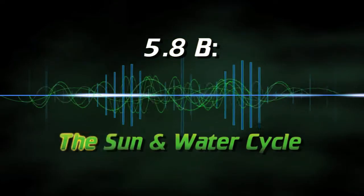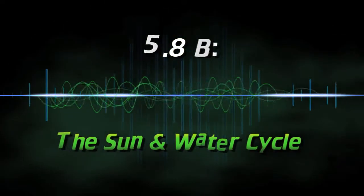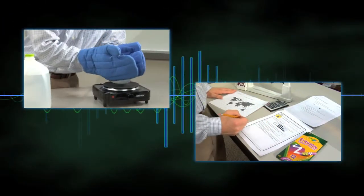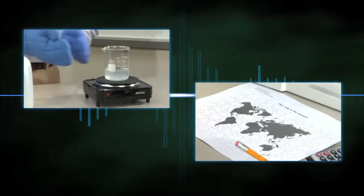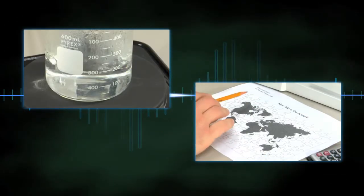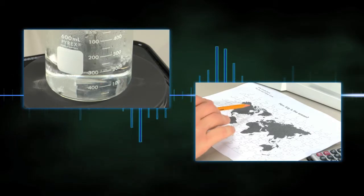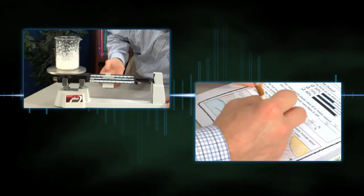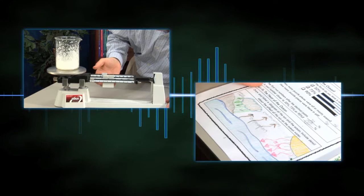5.8b The Sun and Water Cycle. In this activity, students learn how the sun and the ocean interact during the water cycle by simulating the heat of the sun to evaporate water, calculating the size of the ocean, and drawing a water cycle diagram.